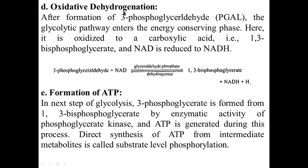Next step is oxidative dehydrogenation. After formation of 3-phosphoglyceraldehyde, the glycolytic pathway enters the energy-conserving phase. Here it is oxidized to a carboxylic acid, that means 1,3-bisphosphoglycerate, and NAD is reduced to NADH₂. 3-phosphoglyceraldehyde combines with NAD with the help of enzyme glyceraldehyde phosphate dehydrogenase to form 1,3-bisphosphoglycerate. In the next step, 3-phosphoglycerate is formed from 1,3-bisphosphoglycerate by the enzymatic activity of phosphoglycerate kinase, and ATP is generated. This direct synthesis of ATP from intermediate metabolites is called substrate-level phosphorylation.